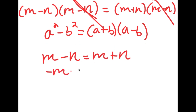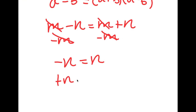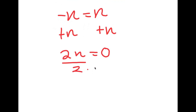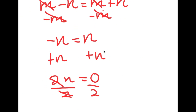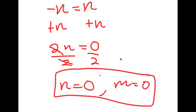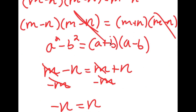Subtracting m from both sides gives negative n equals positive n. Adding n to both sides gives 2n equals zero, so n equals zero. And if n equals zero, substituting back shows m is also equal to zero. So the two solutions to this equation are n equals zero and m equals zero.